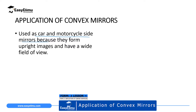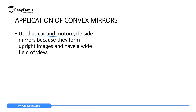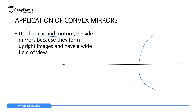I can draw a diagram to represent an upright image and a wide field of view. For convex mirrors, the mirror looks like a curve. The principal axis runs from the pole outward. The inner part is silvered and the outer one is polished, so the reflecting surface is at the front of the mirror. The focal point is behind the mirror, and the center of curvature is also behind the mirror.